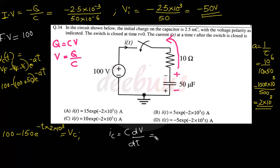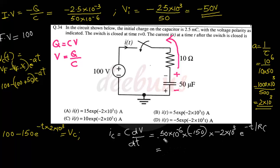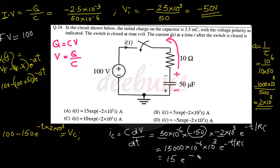iC = C·dv/dt = 50 × 10⁻⁶ × (−150 × (−2 × 10³))·e^(−2000t) = 50 × 10⁻⁶ × 300,000·e^(−2000t) = 15·e^(−2000t) amperes. The answer is (a): i(t) = 15·e^(−2000t).